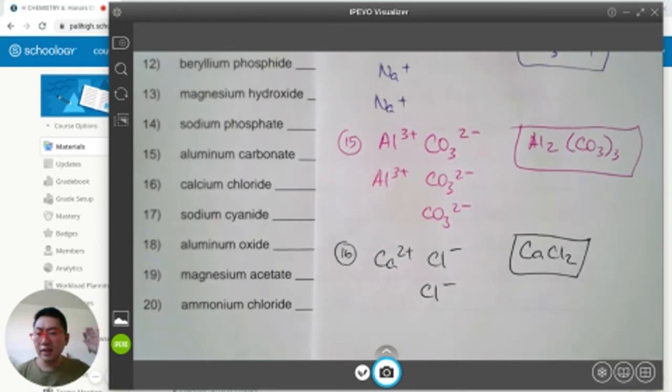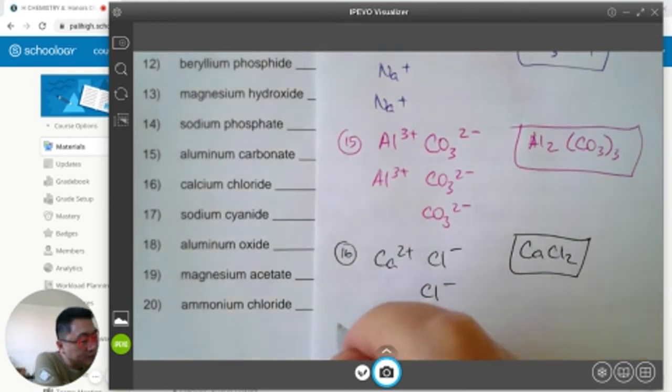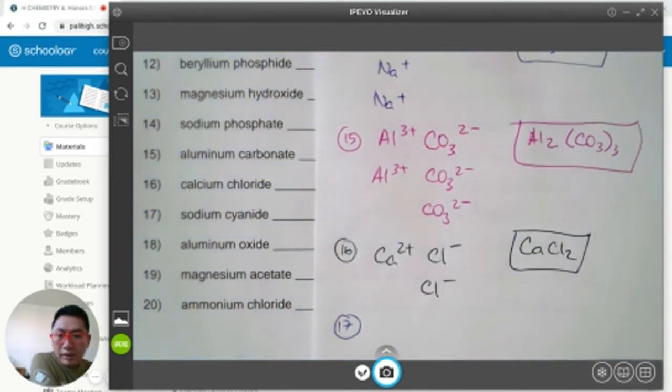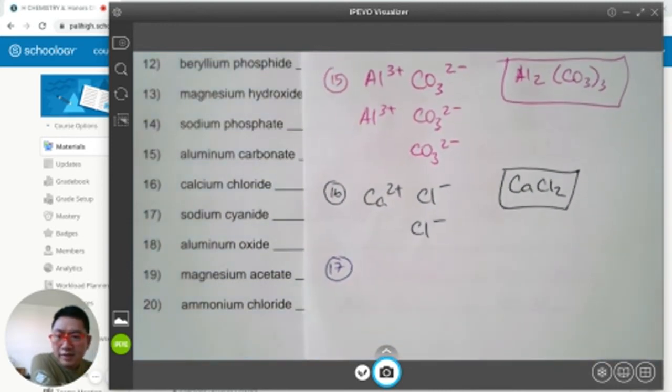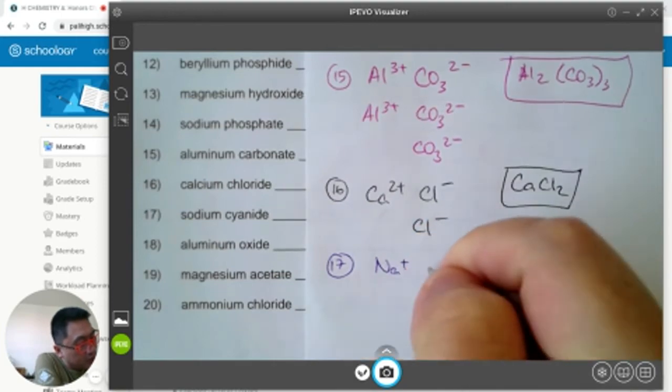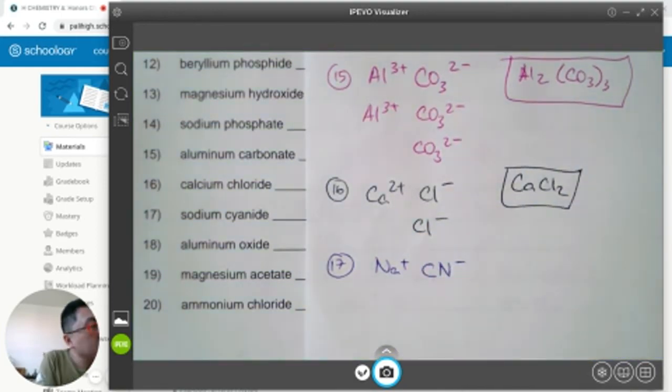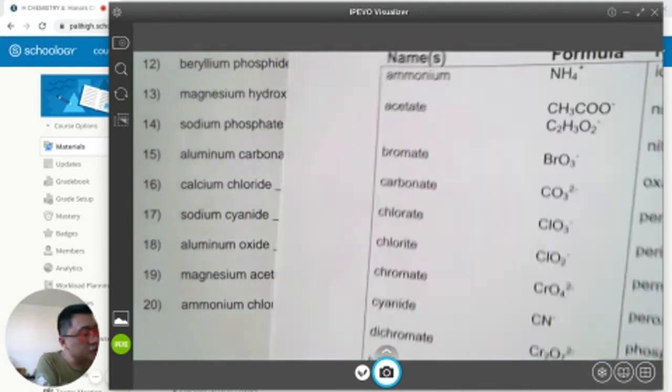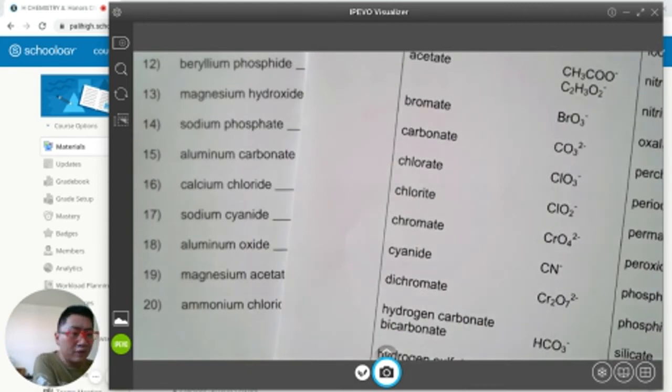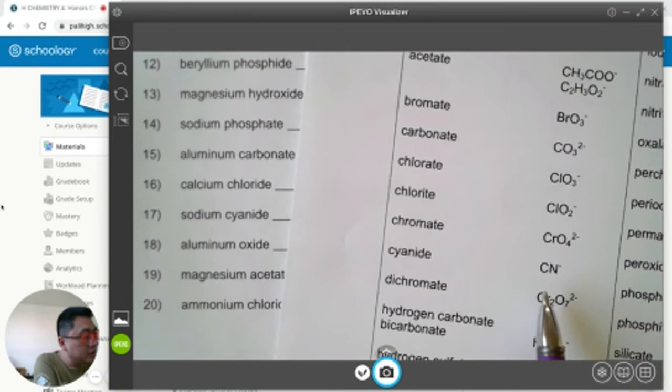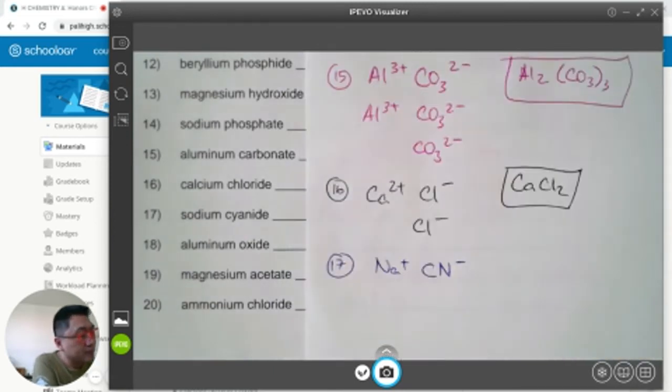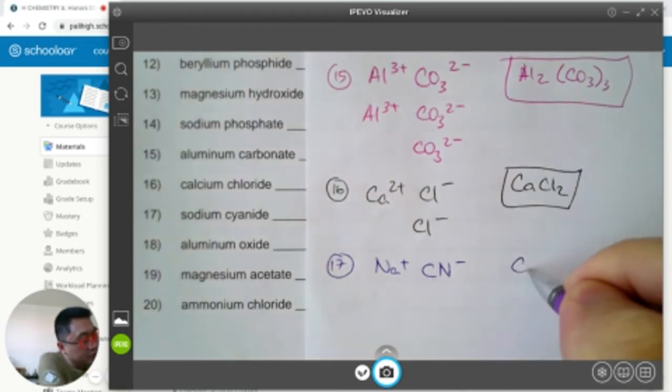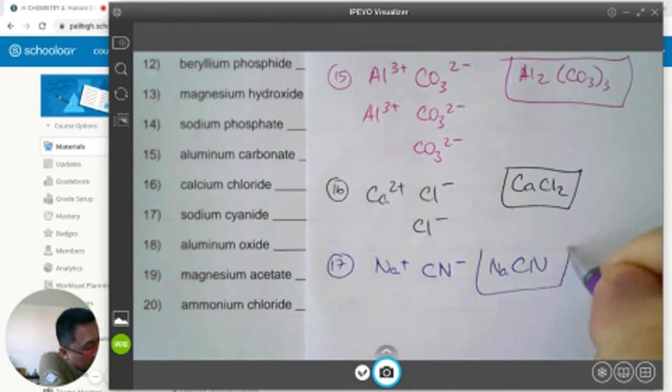Number 17, sodium cyanide. Sodium is Na, its charge is positive 1. The cyanide ion is CN, it's minus 1. It's on page 45. CN minus is the cyanide ion. Positive 1, negative 1 adds up to 0. I don't need to do anything. Just NaCN. That's it.